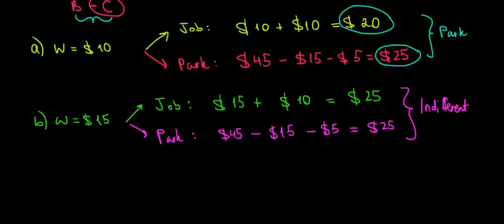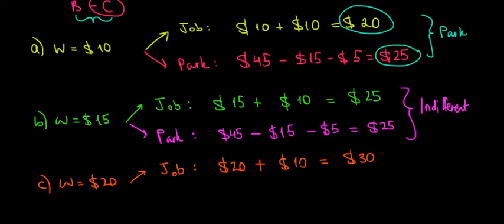And now the last one. What if the wage at the job is $20? If we get $20 per day by working, well in that case we have a gain by staying at the job of $20 from our direct salary plus the $10 of our own satisfaction of doing the work, which should be $30.